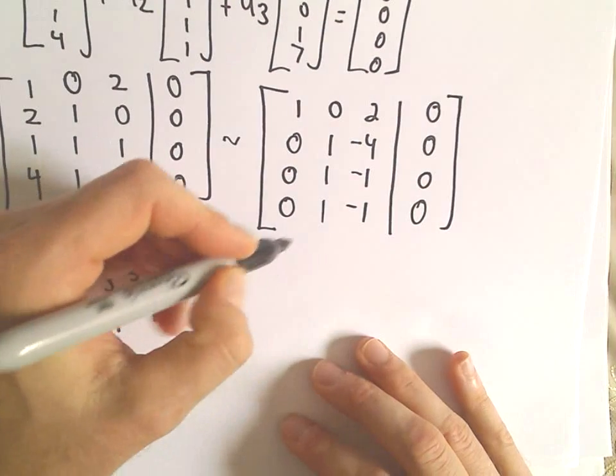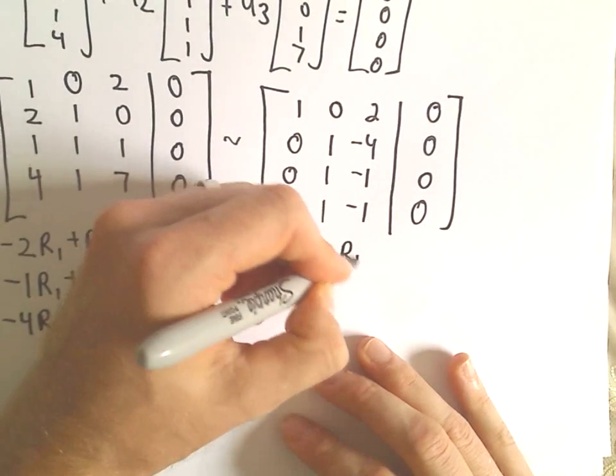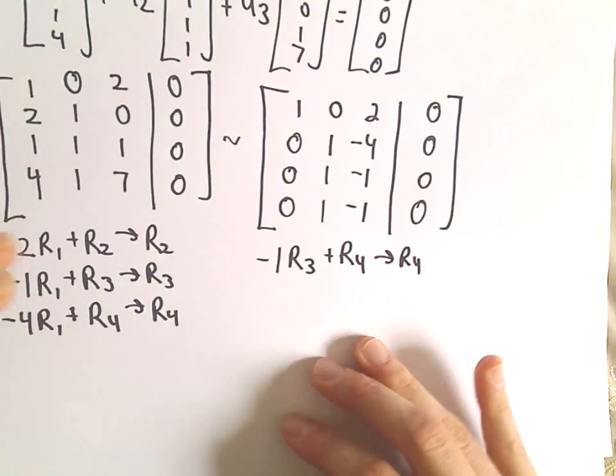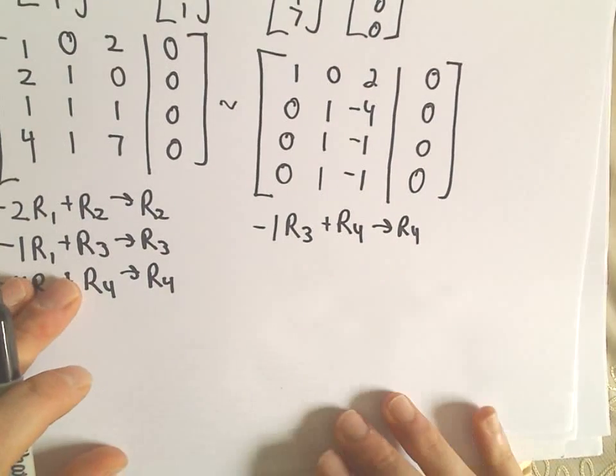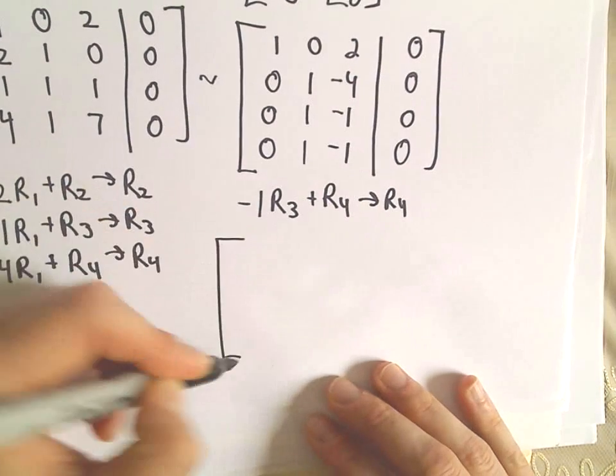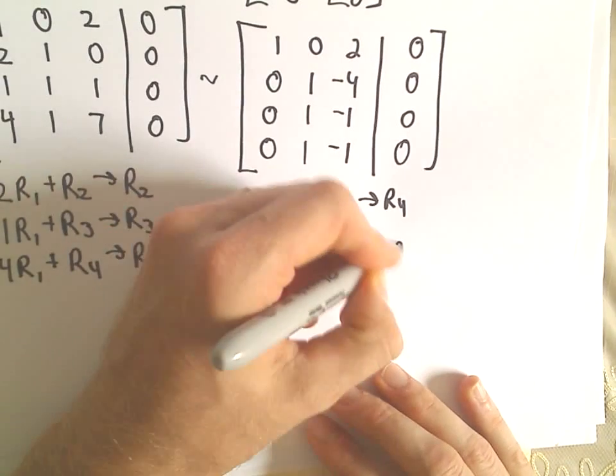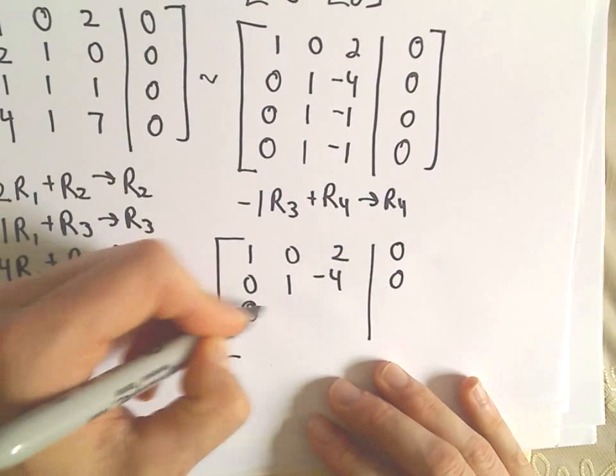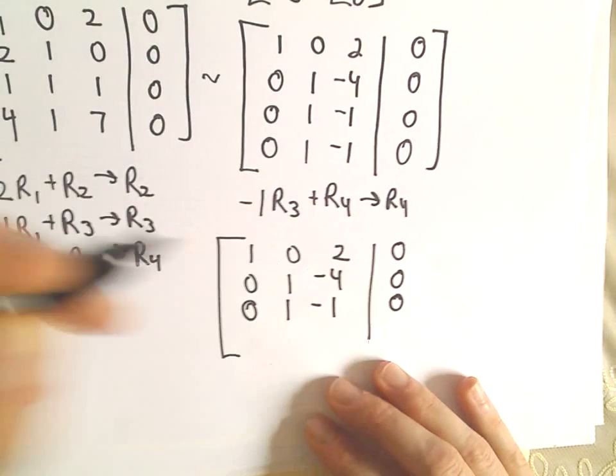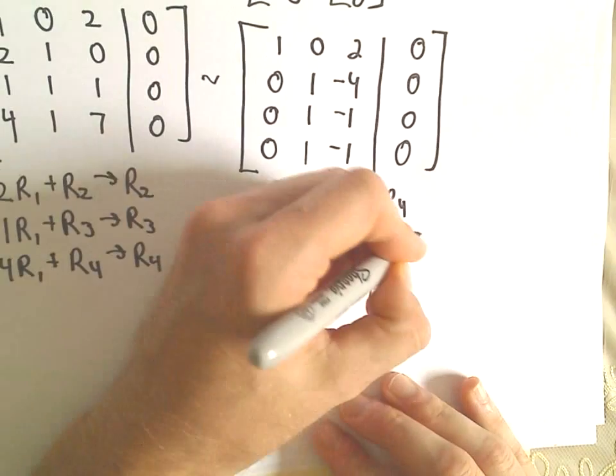Notice immediately we can do, for example, negative 1 times row 3 and add that to row 4 to get my new row 4. I'm basically noticing that they're exactly the same. So if I just multiply one of those by negative 1 and add it to the other, we can simply make that row into a bunch of 0's.